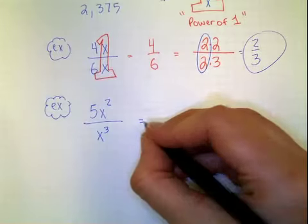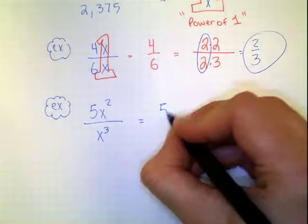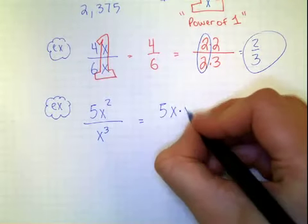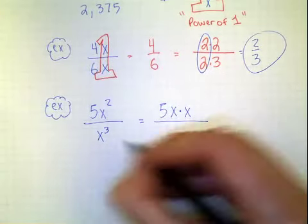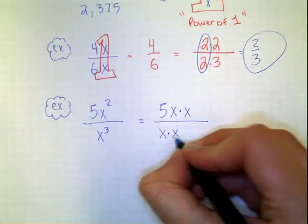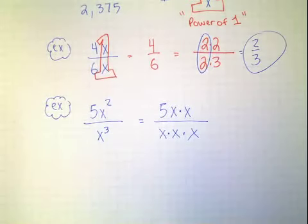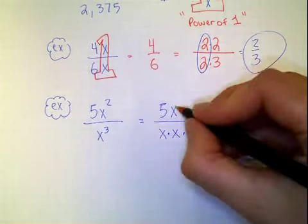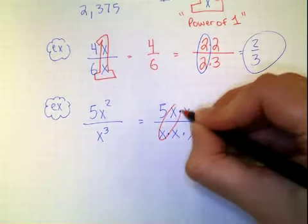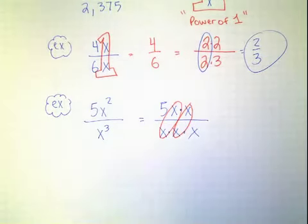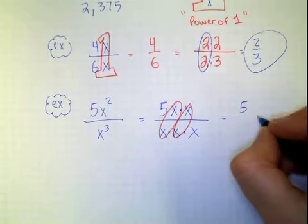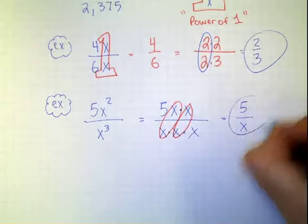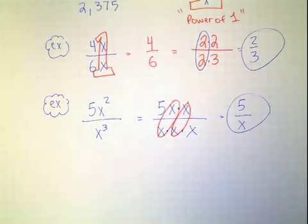Right when I see this problem, the first thing I do is I rewrite it. 5x squared, x squared means x times x. So I break it up into x times x. x to the third means x times x times x, 3 times. If you break it up into little pieces, you can find all the power of 1's. So I see these are a power of 1. And these are a power of 1. And what are you left with? You're left with a 5 on top. And what's left on bottom? x. And that's your answer. Power of 1. We simplified it.